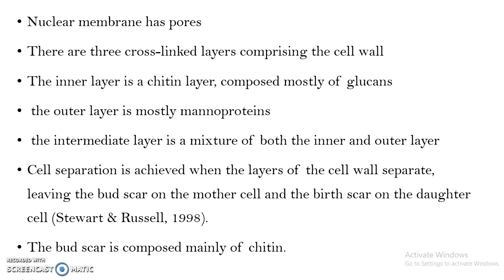Coming to the cell wall: we can see three cross-linked layers — the inner layer, outer layer, and the intermediate layer. The inner layer is mainly composed of glucan, and the outer layer of mannoproteins; the intermediate layer is a mixture of both. Another important feature is that on budding, upon detachment of the bud from the parent cell, the parent cell will form a scar on the surface of the cell wall called the bud scar. The daughter cell also develops a scar called the birth scar. The bud scar is mainly composed of chitin.